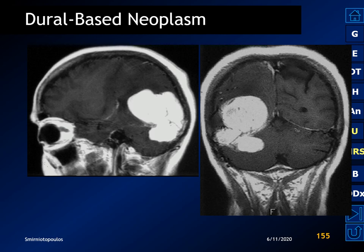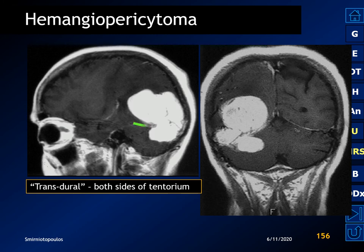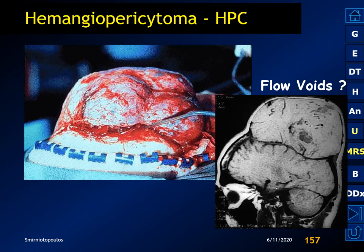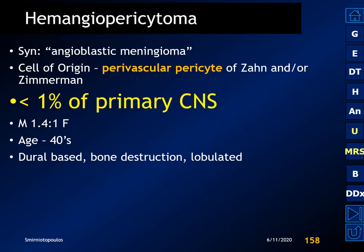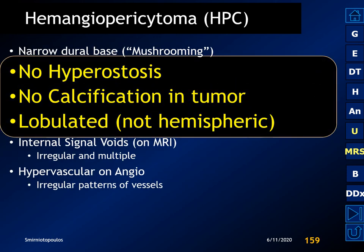Here we have a dural-based tumor that instead of being hemispheric shows a very lobulated configuration. Both meningiomas and hemangiopericytomas can be transdural, appearing on both sides of the falx or the tentorium. Here is another example of a hemangiopericytoma — an enormous, very lobulated mass with multiple irregular flow voids. Hemangiopericytomas represent a couple percent of dural-based tumors and have a slight male predilection. They never have hyperostosis, and we never see calcification or psammoma bodies within the tumor.